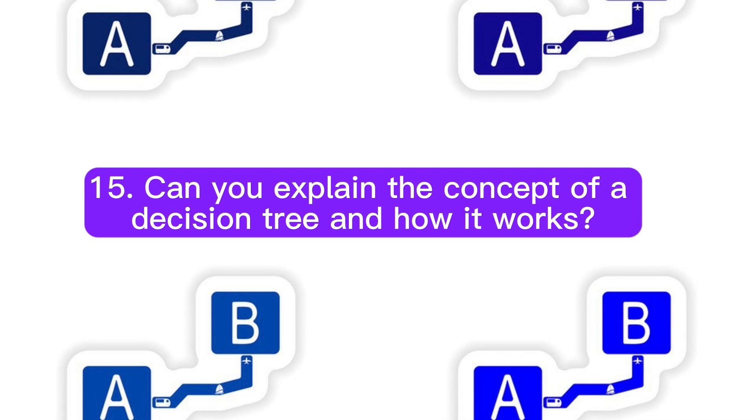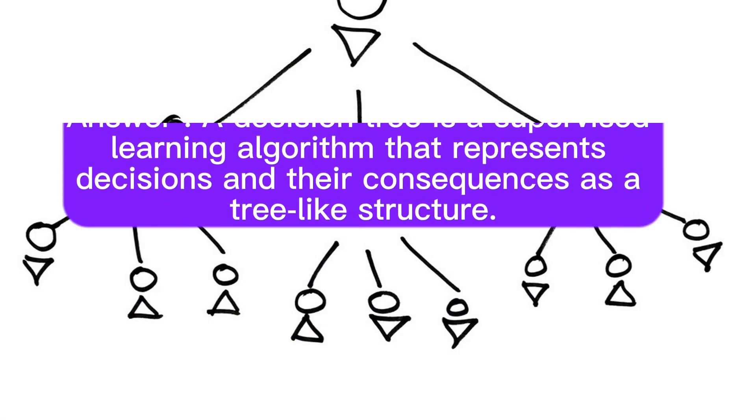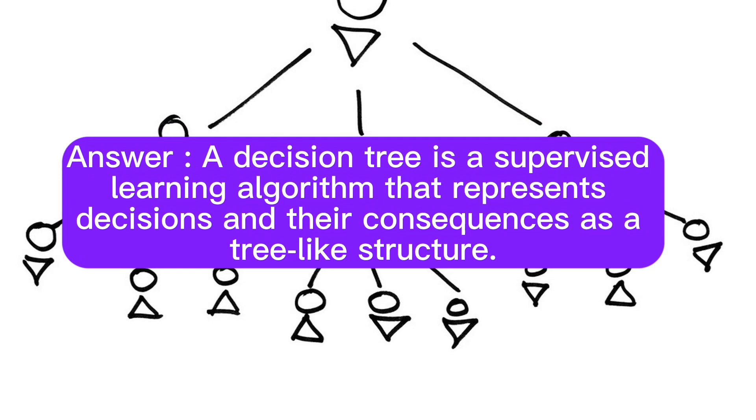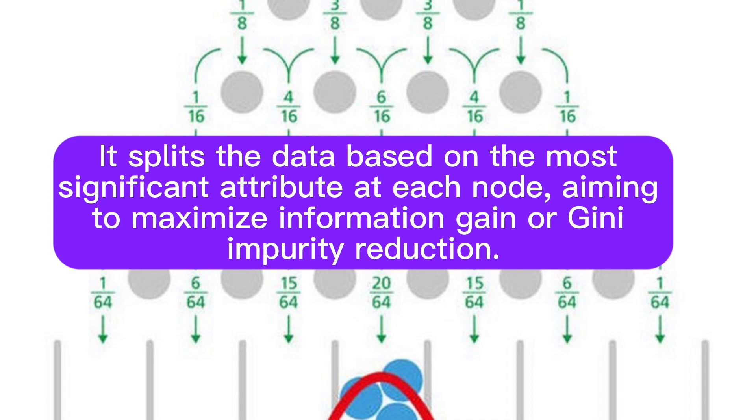Question 15: Can you explain the concept of a decision tree and how it works? Answer: A decision tree is a supervised learning algorithm that represents decisions and their consequences as a tree-like structure. It splits the data based on the most significant attribute at each node, aiming to maximize information gain or Gini impurity reduction.